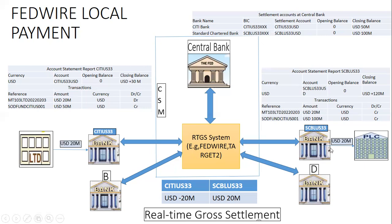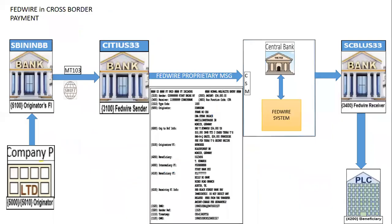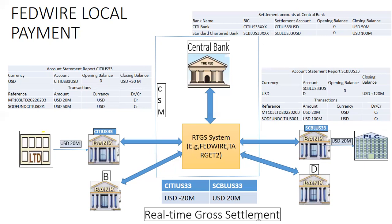The receiving bank will then credit the payment to the PLC company that holds the account at Standard Bank US. This is a straightforward example of a local payment settled through the FedWire system.